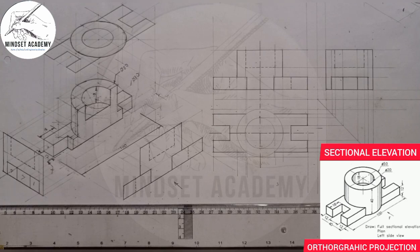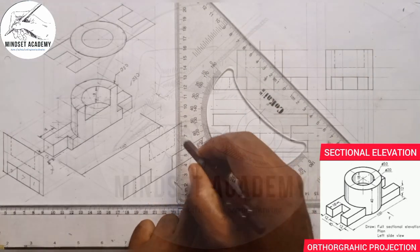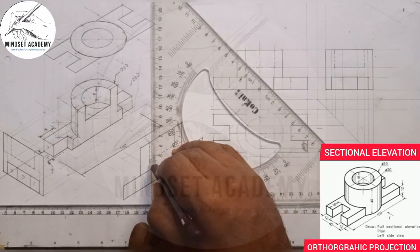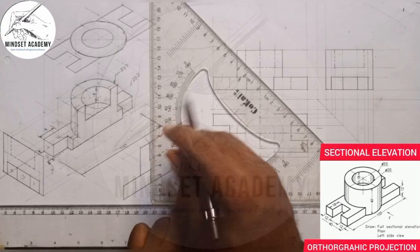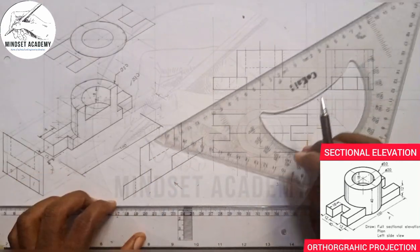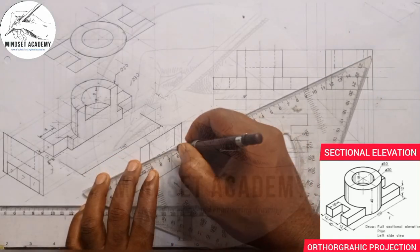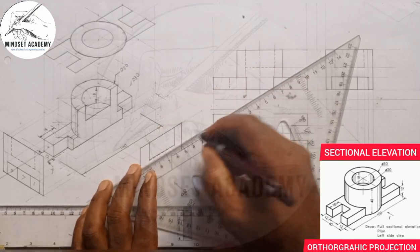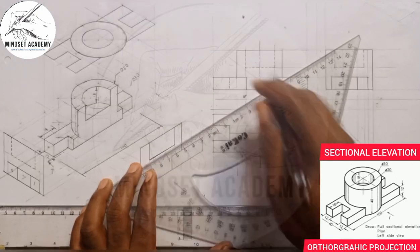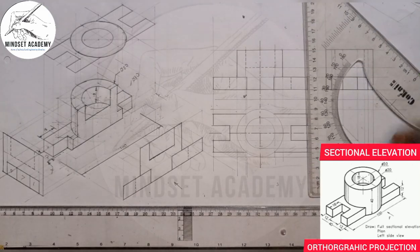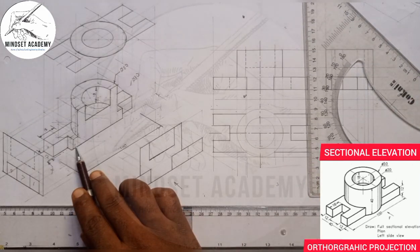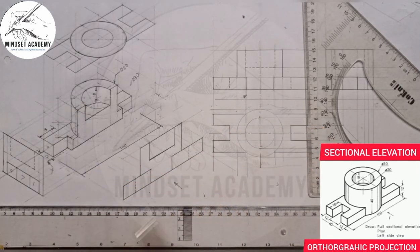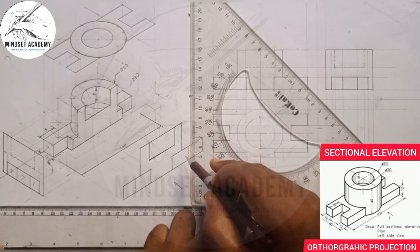Initially we were not seeing this — that's why it was a hidden line. But since we are seeing it now, it will not be a dashed line; I'm going to thicken it. That place is now exposed, so I'm going to thicken it in this manner. The line that was hidden before is now visible, so it will be a thick line — both of them will be thick lines.